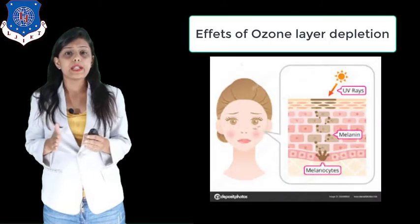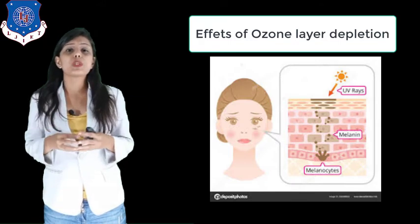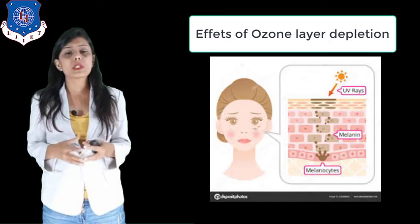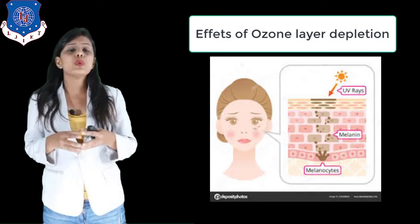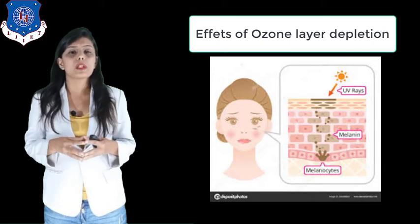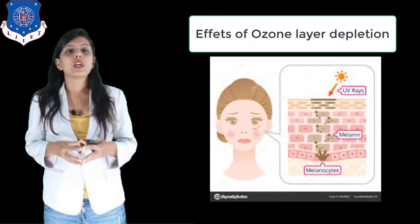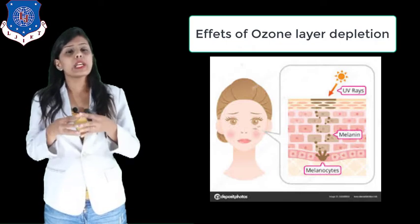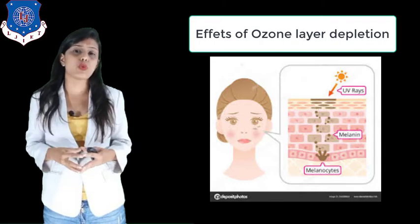The third effect is on melanin-producing cells of the epidermis, the upper layer of the skin, which are important for the human immune system. These will be destroyed by UV rays resulting in immune suppression. Fair people who cannot produce enough melanin will be at great risk of UV exposure.